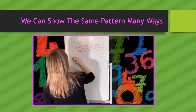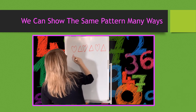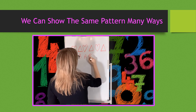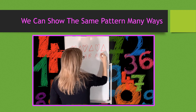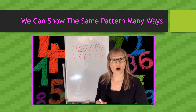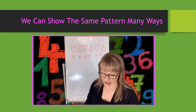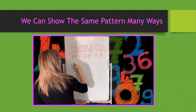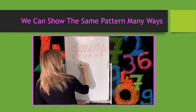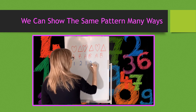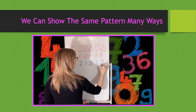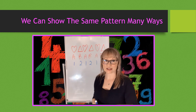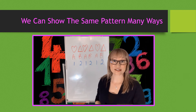For example, my hearts will be A and triangles will be B. So A, B, A, B. I can also turn that into a number pattern. So I'm going to do one for hearts and two for my triangle — so one, two, one, two — many different ways that I can represent the very same pattern.